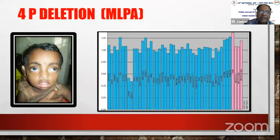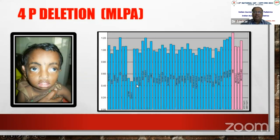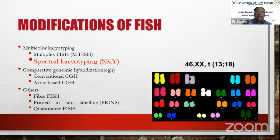Deletions can also be detected by MLPA — multiplex ligation-dependent probe amplification — a DNA-based test. It shows that in a specific area, only 50 percent of expected signal is present, confirming a deletion. For example, a patient with 4p deletion syndrome can be confirmed this way. Spectral karyotyping can color entire chromosomes but is used only in research settings and is not routinely available clinically.